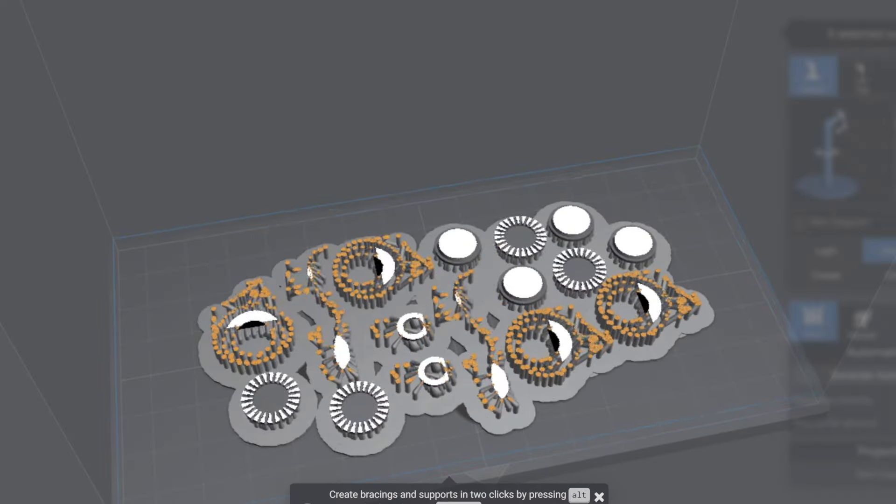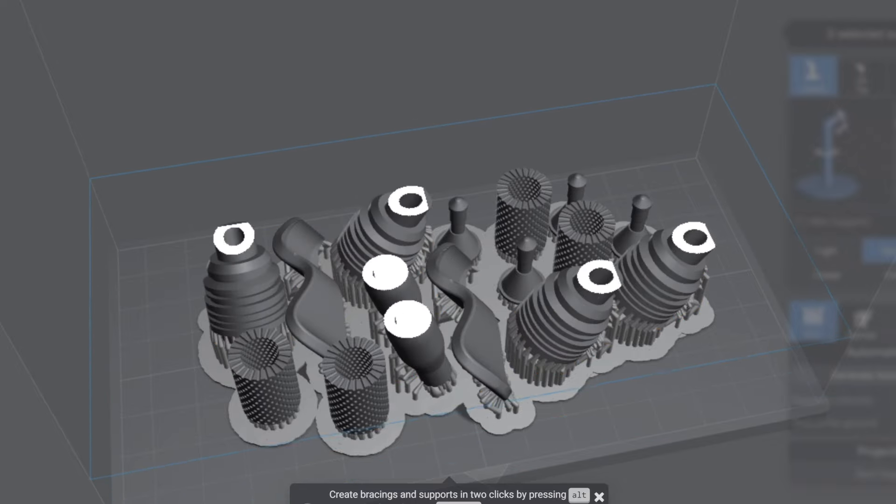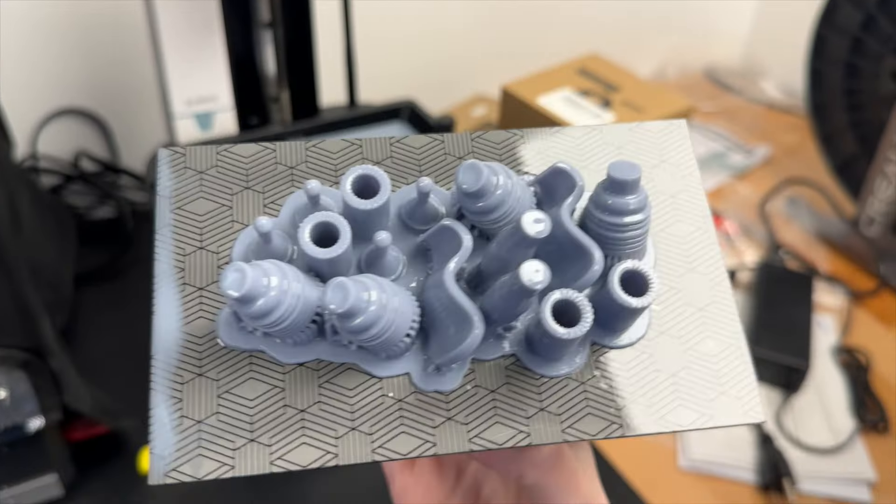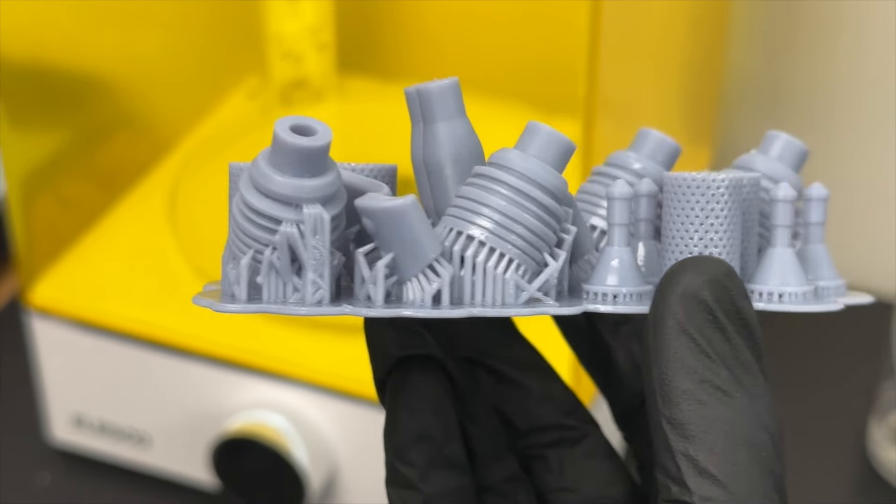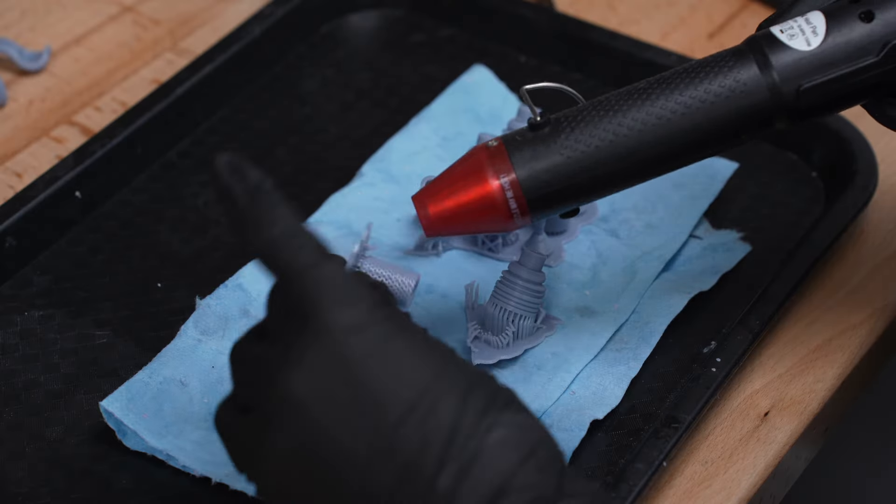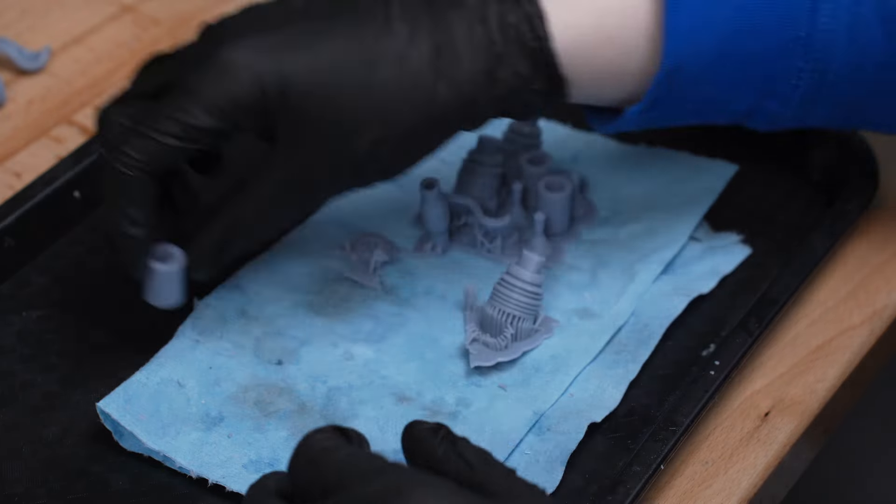I'll be resin 3D printing pretty much everything in this video, since a lot of it is smaller and more detailed props. The rebreathers were a lot smaller than I would have originally thought, so I had no issues fitting two rounds of pieces on one small resin printer build plate.